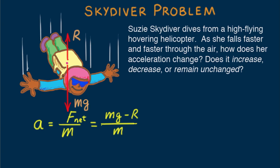Although mg remains constant, air resistance R changes. The faster she falls, the greater R becomes. And the greater R becomes, the less net force becomes. A decreased net force means a decreased acceleration.